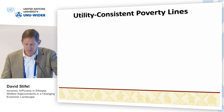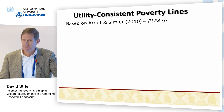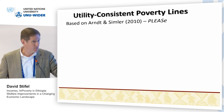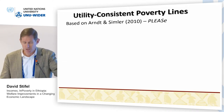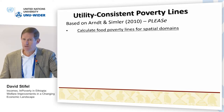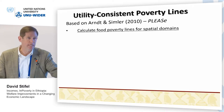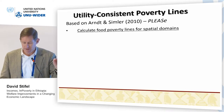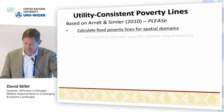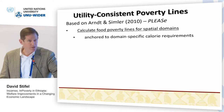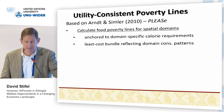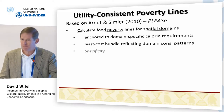The approach here is to use the PLEASE software — the Poverty Line Estimation Analytical Software — available on the wider website, with a link from the book for this project. The idea is to calculate food poverty lines for very specific spatial domains. In Ethiopia we have 20 spatial domains: nine urban and rural for nine regions, then Addis and Harari combined. They are anchored on domain-specific calorie requirements and based on the least-cost bundle reflecting domain consumption patterns — that's the specificity I was talking about.